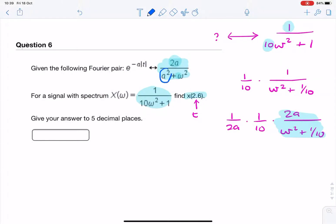So a squared is 1 over 10. a is 1 over square root of 10.